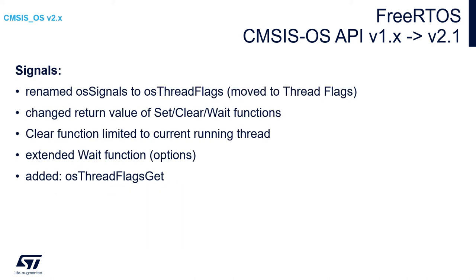Concerning signals, there is an important change of the name. Instead of signals, we are using within CMSIS-OS v2 thread flags. There is a change of the return value of set, clear, and wait functions, and the clear function is limited to the currently running thread only. There is also a new function, OS thread flag get.